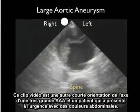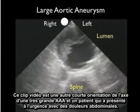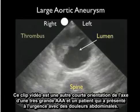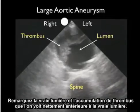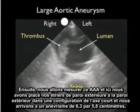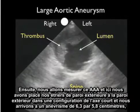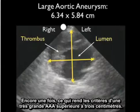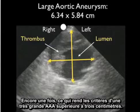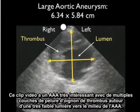This video clip is another short axis orientation of a very large triple A in a patient who presented to the ED with abdominal pain. We mark the spine as our landmark, and anterior to the spine we see a very large triple A. Notice the true lumen and the accumulation of thrombus substantially anterior to the true lumen. We've placed our calipers from outer wall to outer wall in a short axis configuration, and we come up with an aneurysm of 6.3 by 5.8 centimeters, again making the criteria of a very large triple A greater than 3 centimeters.